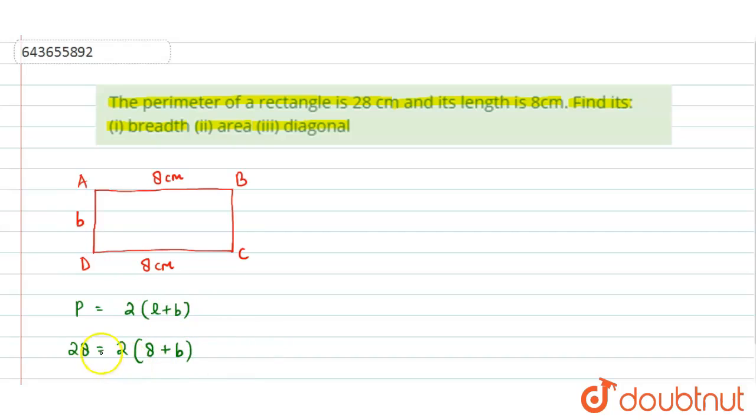Dividing 28 by 2 gives us 14, so B + 8 = 14. From this, we get B = 6 centimeters. So the breadth of this rectangle is 6 centimeters.